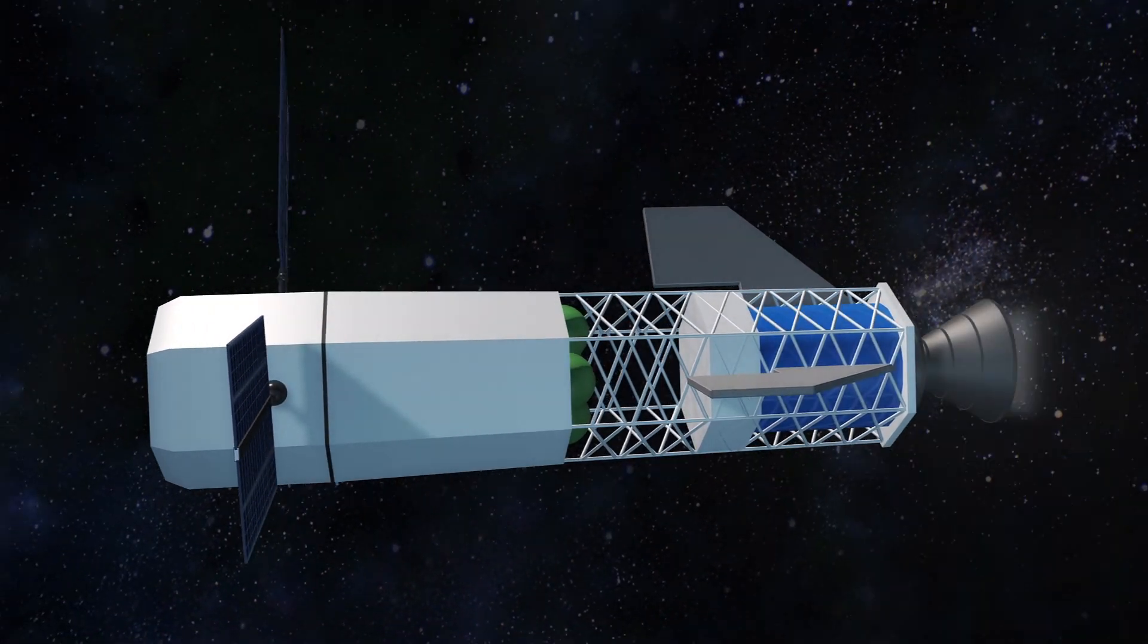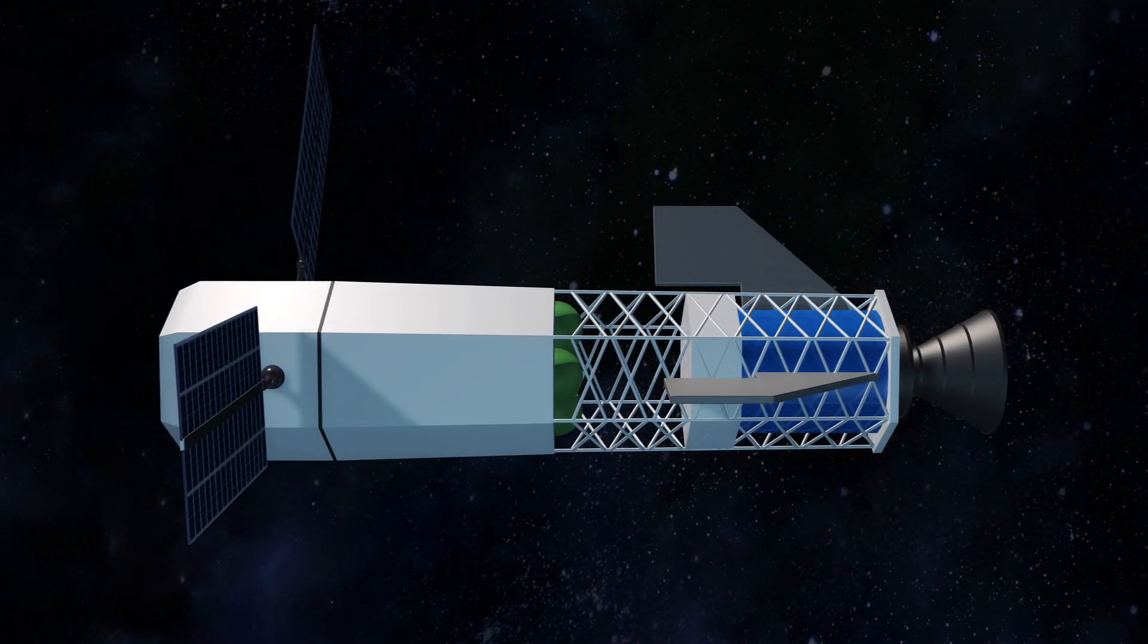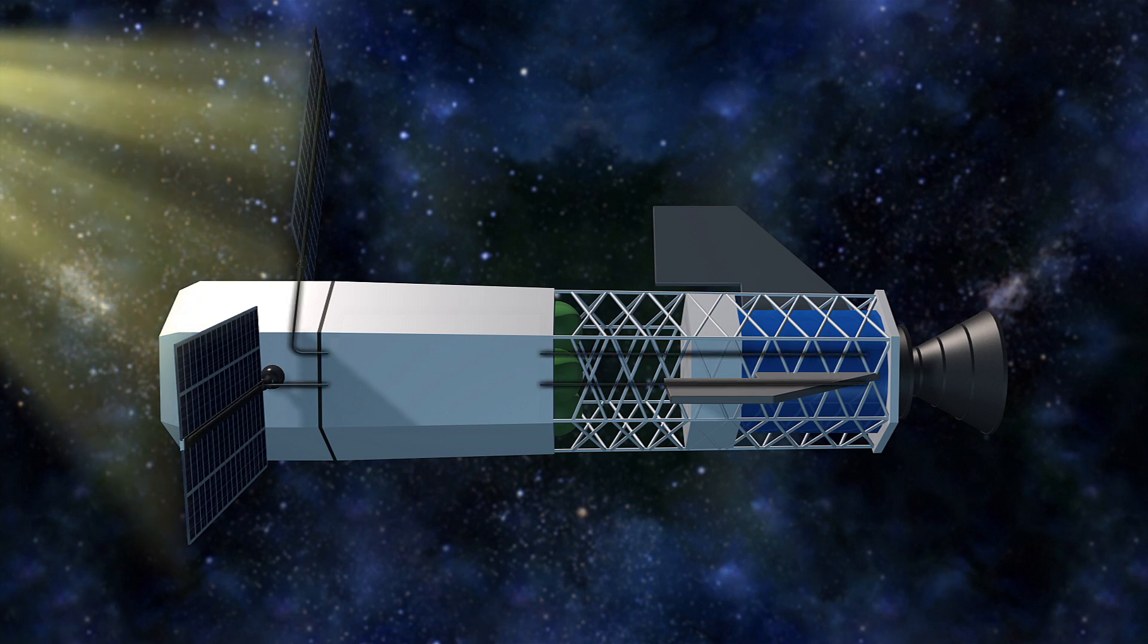The fusion rocket pulses at a rate of one blast per minute, causing exhaust to exit the divergent magnetic nozzle at 30 kilometers per second.